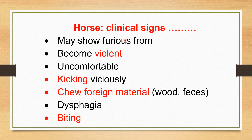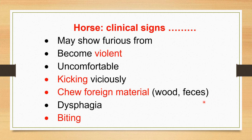Continuing the clinical signs of rabies in horse: the horse may show the furious form, becoming very violent and uncomfortable with excitation. The horse kicks viciously at objects and frequently chews foreign material found in the farm, such as wood, fences, cribs, or any other object.